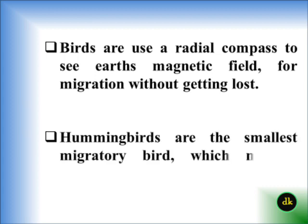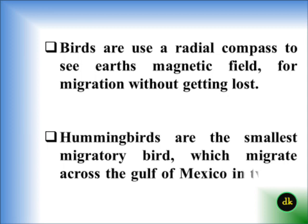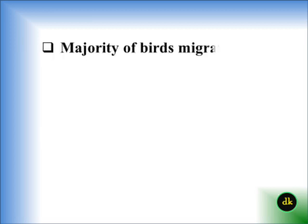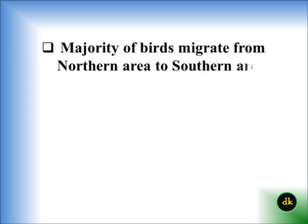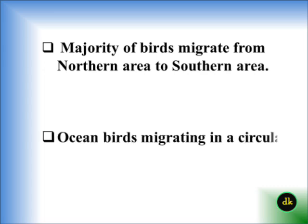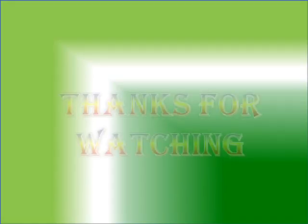The hummingbird is the smallest migratory bird, migrating across the Gulf of Mexico twice a year. The majority of birds migrate from northern areas to southern areas, while ocean birds migrate in a circular path.